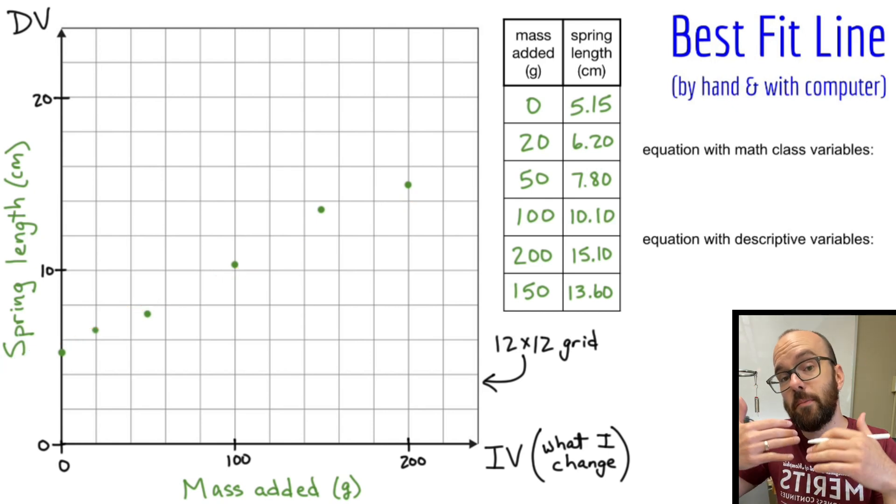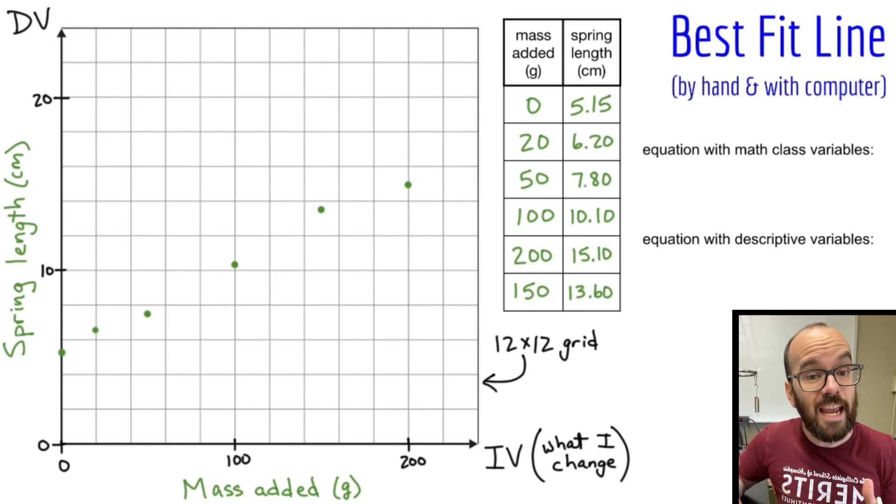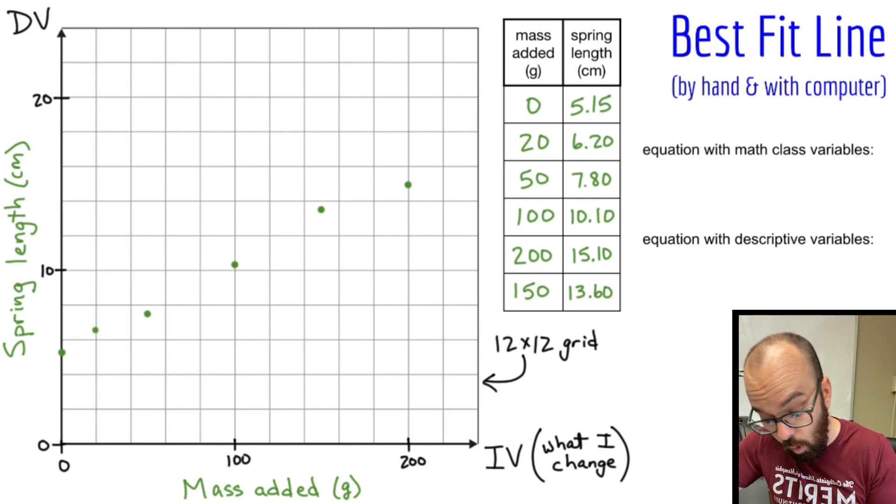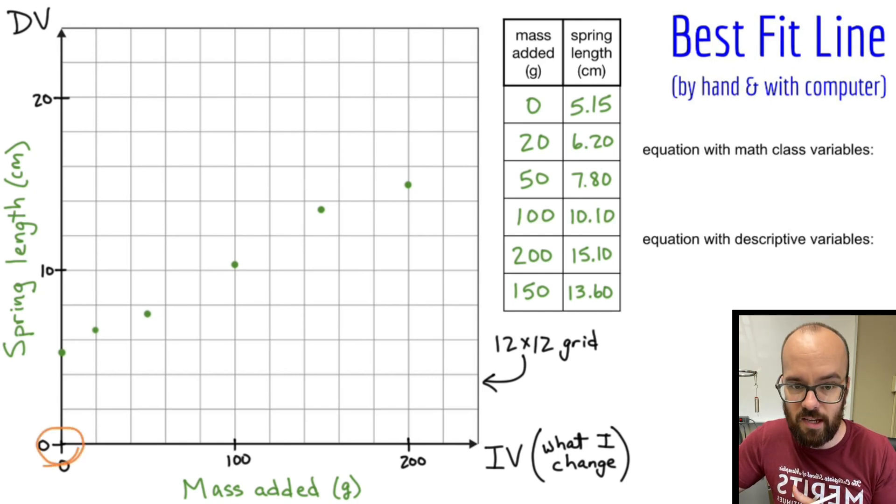Ideally, I want to have the same number of points above and below. I want the above points to be kind of spread out, the below points to be kind of spread out. It can go through some of the points, but it doesn't have to. In fact, your line of best fit doesn't have to intersect any individual point. It may, in which case cool, but it doesn't have to. Sometimes I see students try to force the line through certain points, or I see them try to force the line through zero zero, which often is not the case. It can be, but never force the line through zero zero.